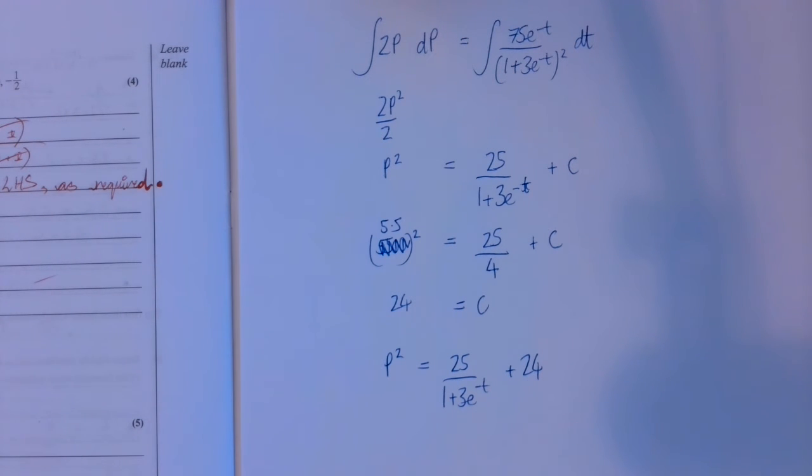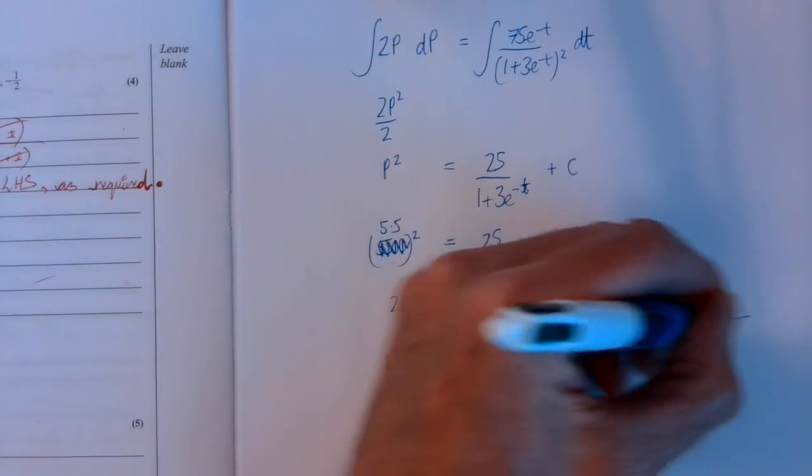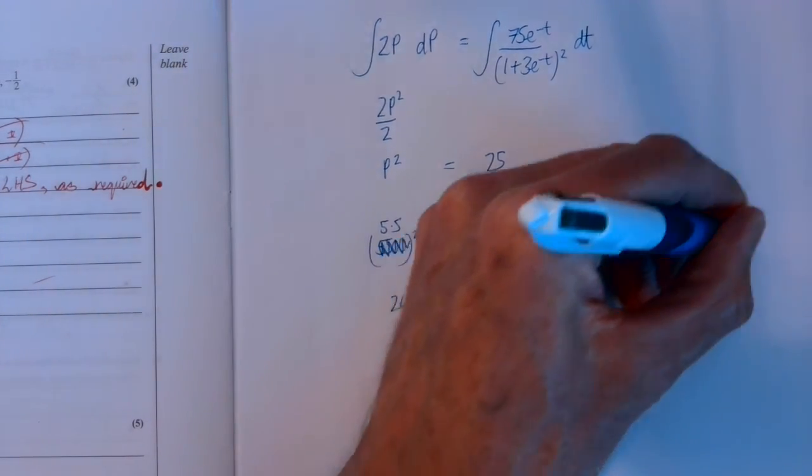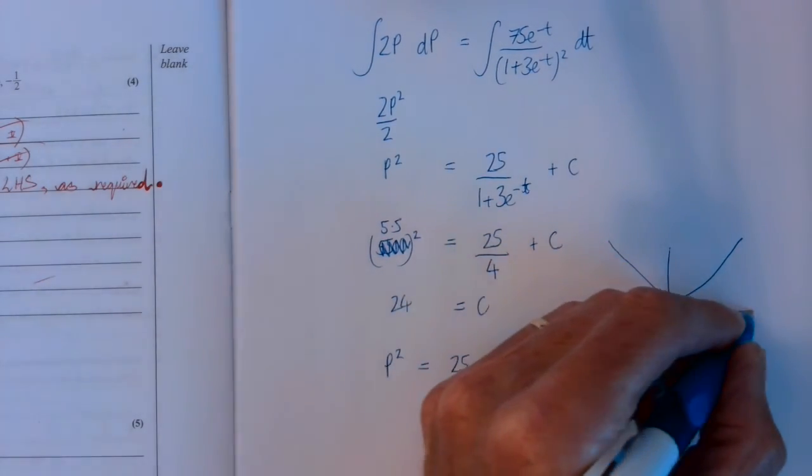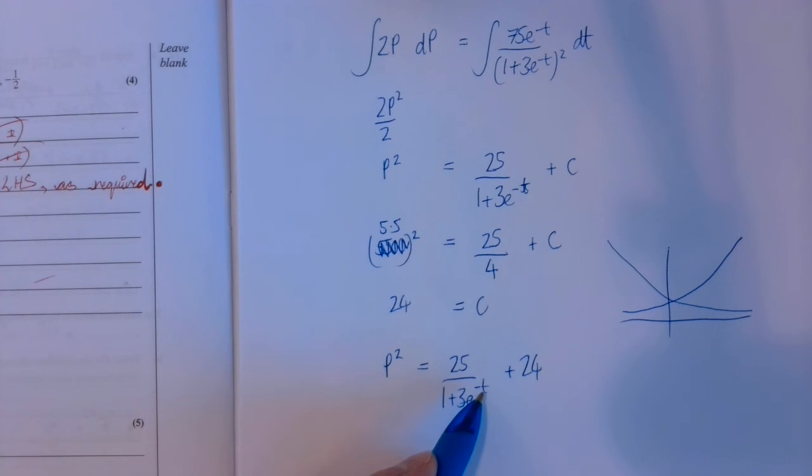Okay, and the last part of the question asks what happens to the population as t gets very big. Well, e to the minus t, this is the graph of e to the x or e to the t, and e to the minus t looks like this. So as t gets really big,